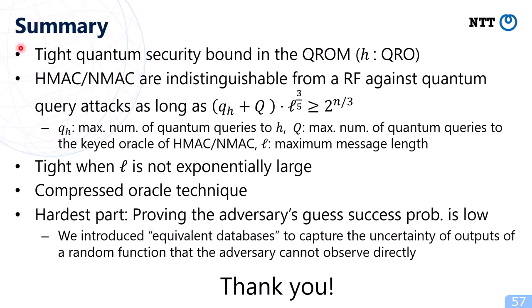Finally, I'd like to provide the summary of today's talk. We showed the tight quantum security bound of HMAC and NMAC in the quantum random oracle model, where the compression function H is modeled as a quantum random oracle. We showed that HMAC and NMAC are indistinguishable from a random function against quantum query attacks as long as the inequality holds, meaning the tight quantum security is order 2^(N/3) when L is not exponentially large. To prove this bound, we used the compressed oracle technique. The hardest part was proving the adversary's success probability is very low, and to do so, we introduced the new notion of equivalent databases to capture the uncertainty of outputs of a random function that the adversary cannot observe directly. Thank you for your attention.